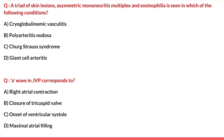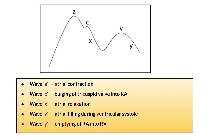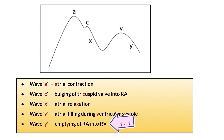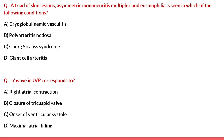Next question: the 'a' wave in JVP corresponds to — options are right atrial contraction, closure of tricuspid valve, onset of ventricular systole, and maximal atrial filling. The JVP wave has five waves: a, c, x, v, and y. Wave 'a' corresponds to atrial contraction; wave 'c' corresponds to tricuspid valve bulging into the right atrium; wave 'x' is atrial relaxation; wave 'v' is venous filling of the atrium during ventricular systole; and wave 'y' is emptying of the right atrium into the right ventricle. Going back to the question, 'a' wave corresponds to right atrial contraction — so the correct answer is option A.